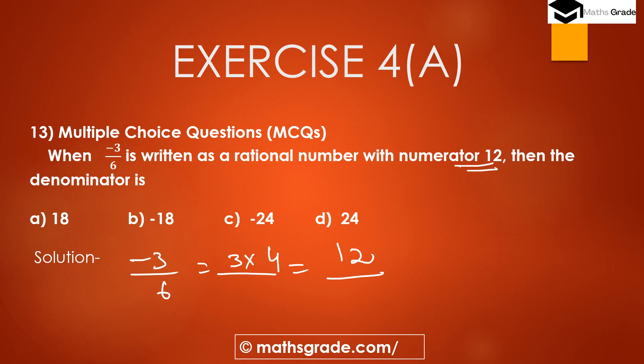In the table: 3 multiplied by 4 is 12, so -3 multiplied by -4 gives us 12 for the numerator. Since we multiplied the numerator by -4, we must also multiply the denominator 6 by -4. So 6 multiplied by -4 is -24.